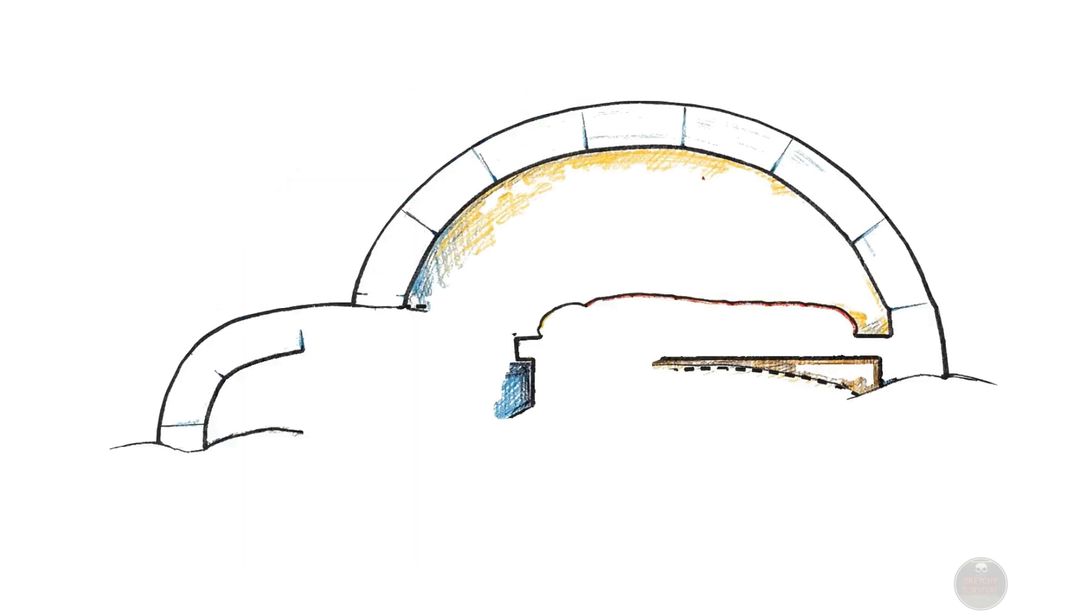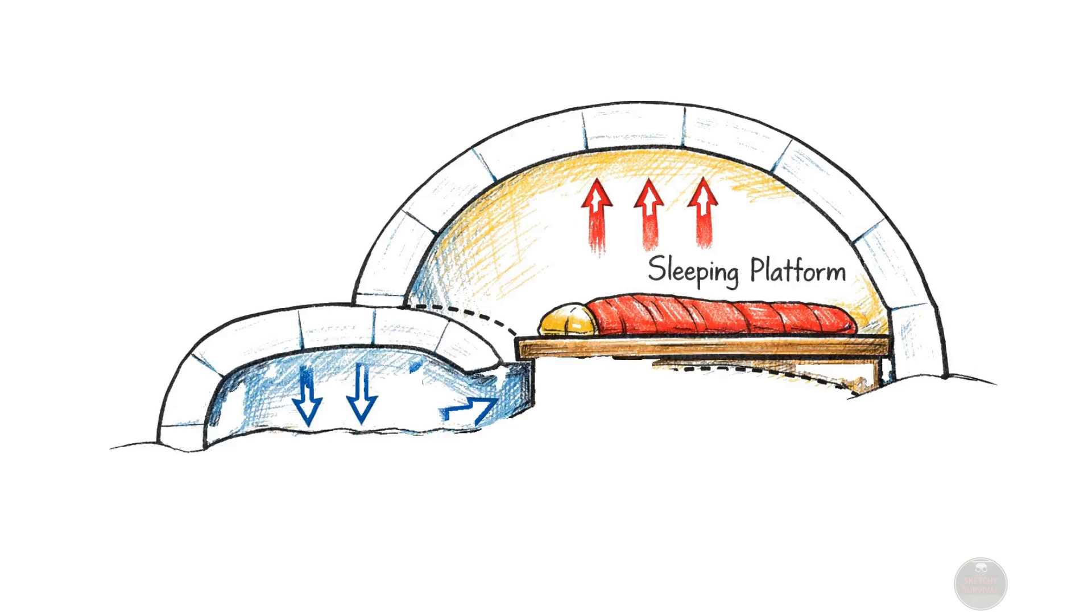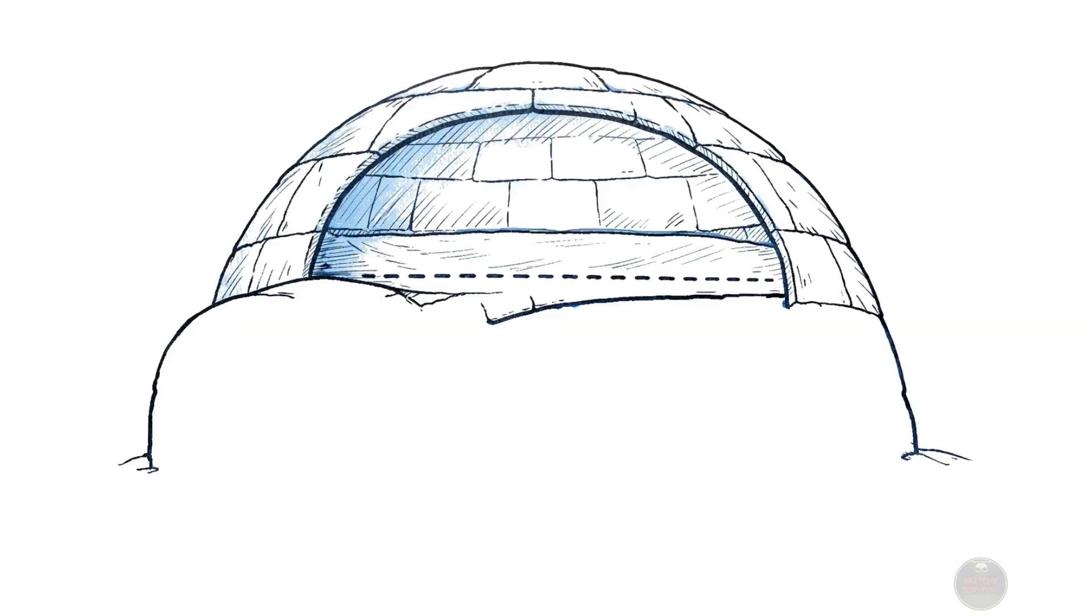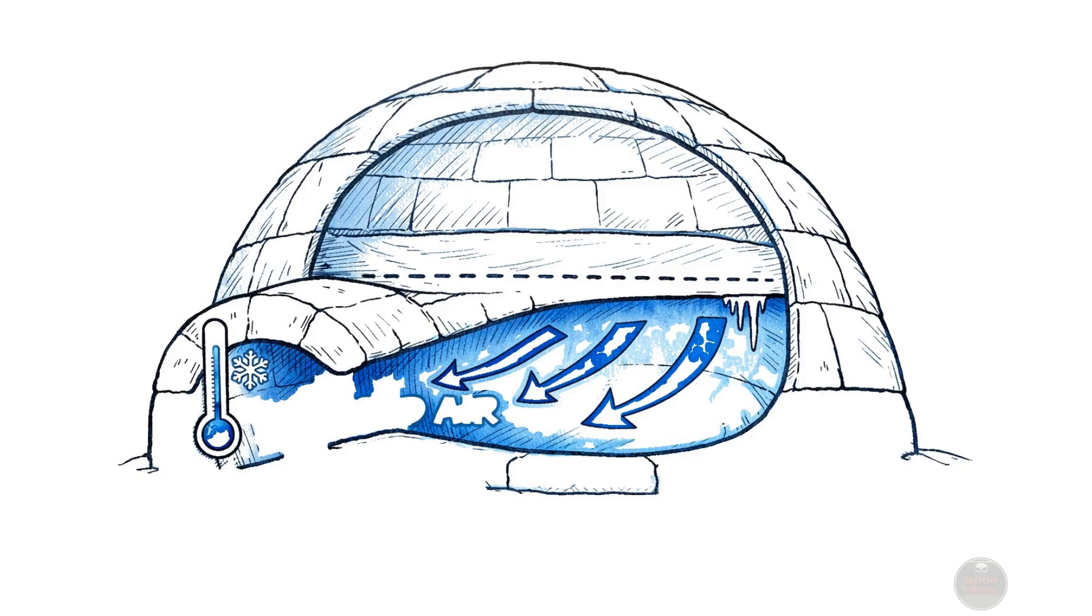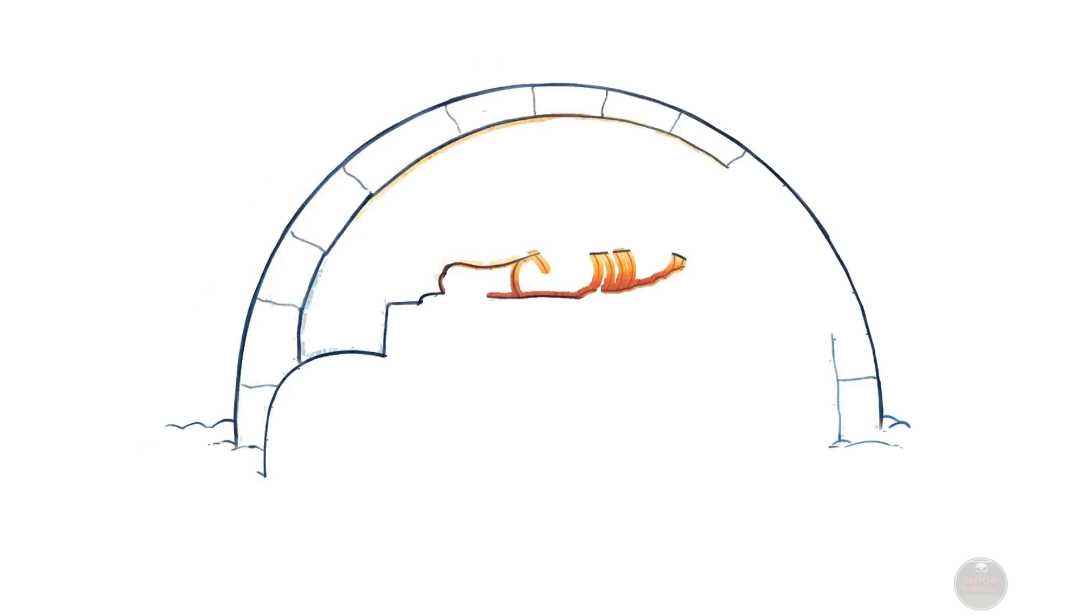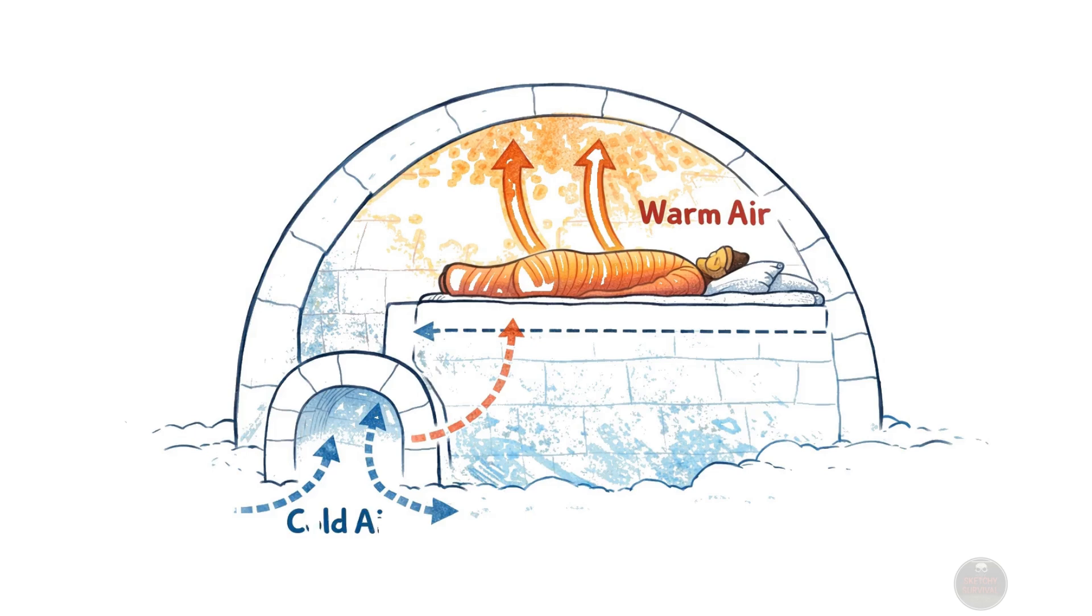A crucial design element is the entrance tunnel, which must always be constructed lower than the main sleeping platform inside the igloo. This specific arrangement allows the denser, colder air to naturally settle and accumulate within the lower entrance tunnel, effectively creating a permanent cold air trap. Meanwhile, the warmer, lighter air generated by your body heat naturally rises and remains concentrated around the elevated sleeping area where you rest.